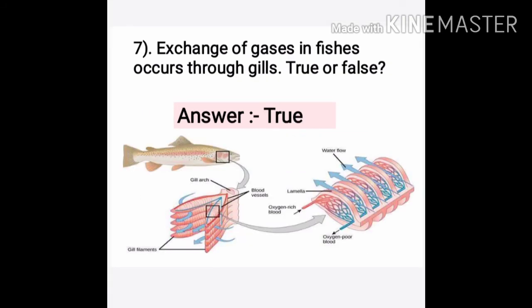Question seven: Exchange of gases in fishes occurs through gills — true or false? The answer is true. In fishes, exchange of gases takes place with the help of gills. Gills are the organ that help in exchange of gases in fishes.